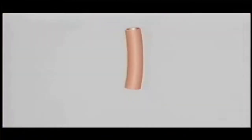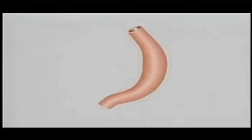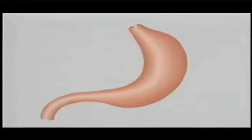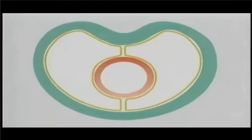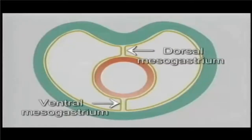The foregut starts as a straight tube. As it develops, it rotates on its long axis, lengthens in a double curve, and expands to become the stomach and the first part of the duodenum. The foregut is different from the rest of the GI tract: the hindgut and midgut are attached to the body wall by a double fold of peritoneum only along the back, whereas the foregut is attached also at the front. Its two attachments are the dorsal mesogastrium behind and the ventral mesogastrium in front.